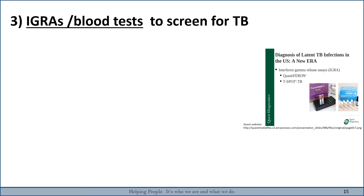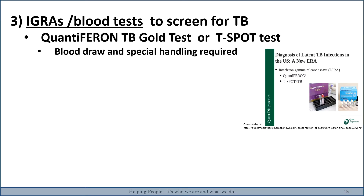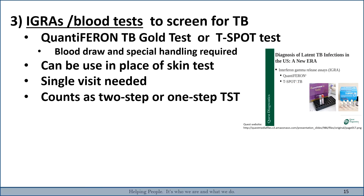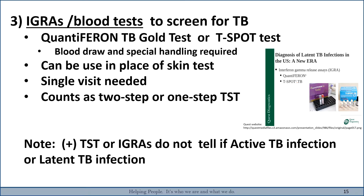Blood tests that screen for TB are called IGRAs. Two options are the QuantiFERON-TB Gold test or the TB spot test. It is a blood draw sent to a reference lab. It can be used in place of the skin test as a single test — no two-step is needed. It counts as a one-step or two-step, and skin tests and blood tests can be used interchangeably from year to year. Note that a positive skin test or blood test does not indicate whether you have an active or latent case of TB.